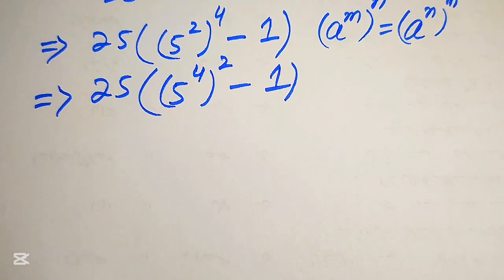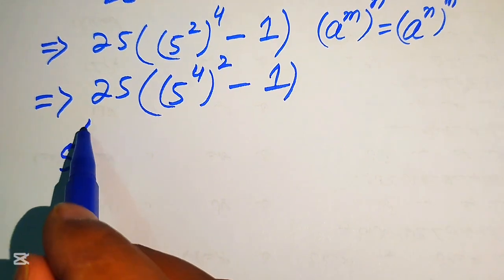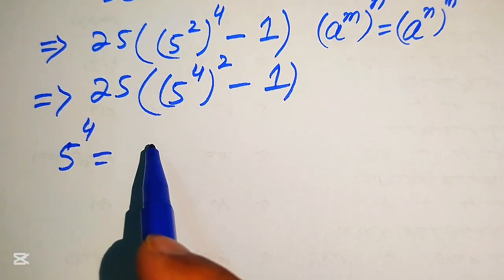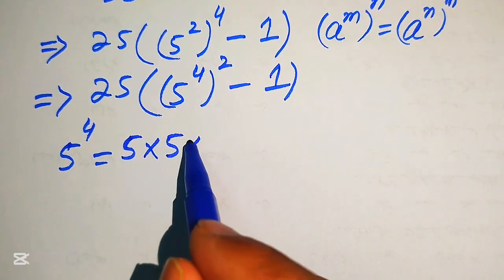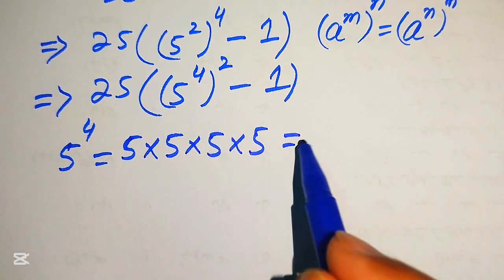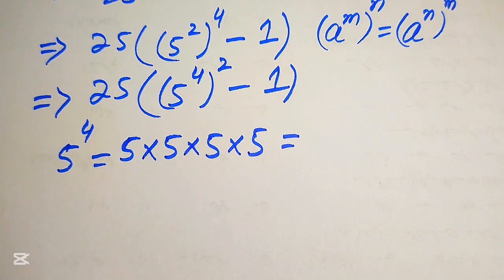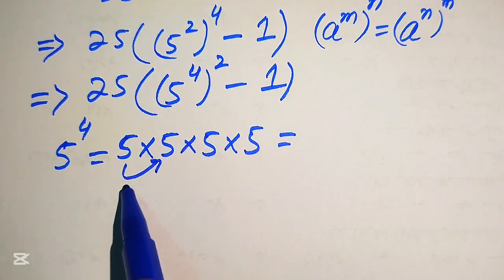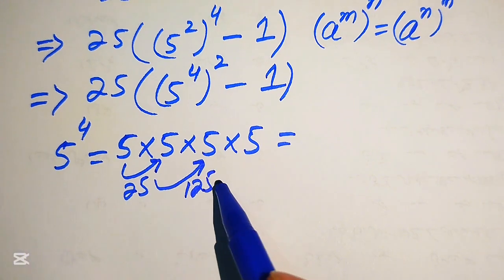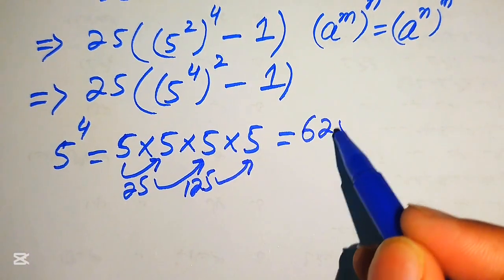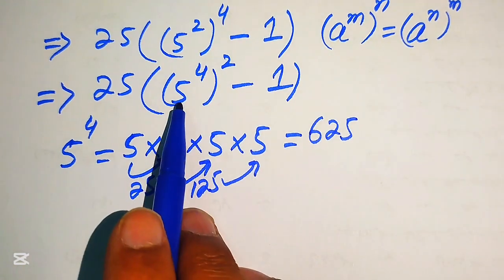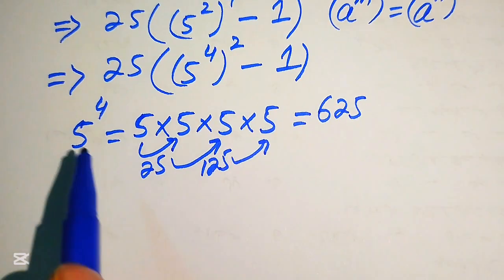Our next target is to find the value of 5 to the power of 4. We multiply 5 four times: 5 × 5 × 5 × 5. Since no calculator is allowed, we break each step: 5 times 5 is 25, 25 times 5 is 125, 125 times 5 is 625. So 5 to the power of 4 equals 625.